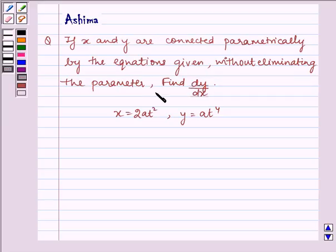without eliminating the parameter, find dy/dx. The given equations are x = 2at² and y = at⁴